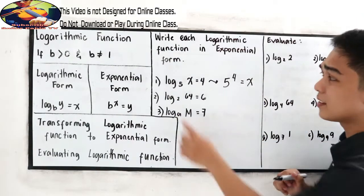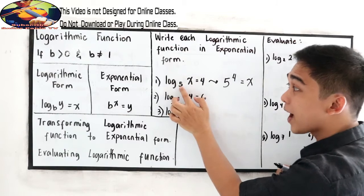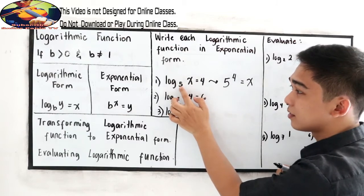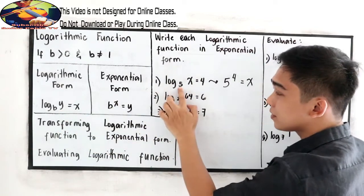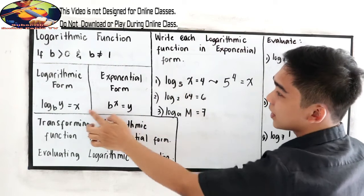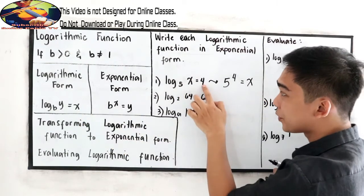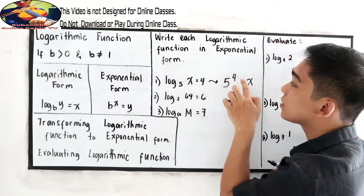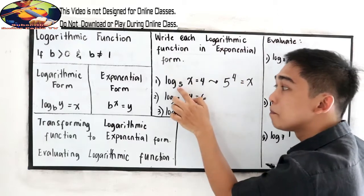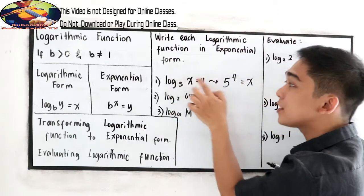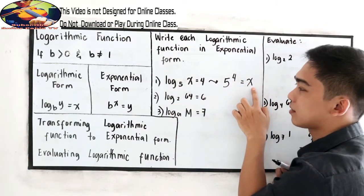Let us repeat. In this case, our b is 5. Then our x here is 4. So b raised to x: 5 raised to 4 is equal to x.